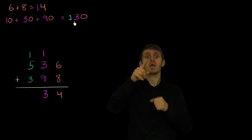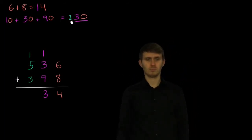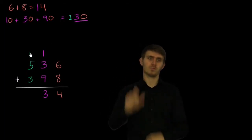So this is the 3. The 3 represents the 30. And then we're placing this 1 in the hundreds place. 10 tens is equal to 100.